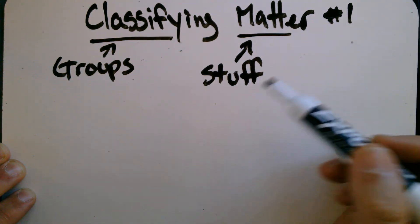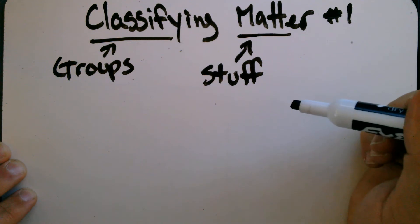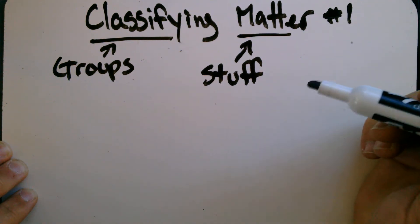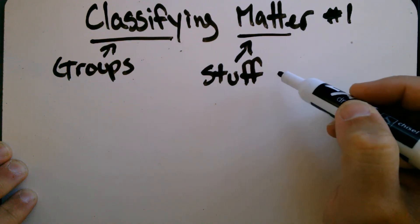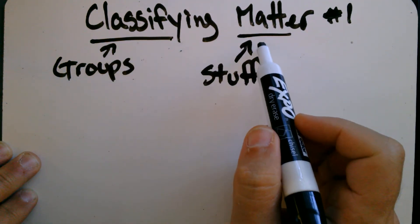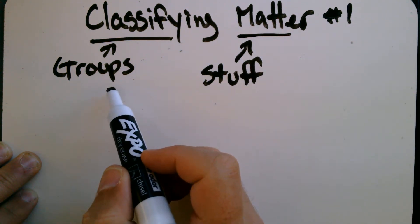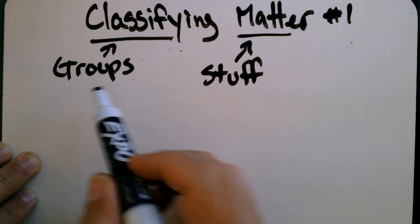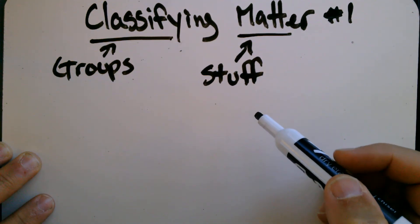Stuff. Matter is anything in the universe that has mass and takes up space. So stuff, so air, water, people, plants, your video game console, your Chromebook, the chair you're sitting in, it's all matter, it's all stuff. So really, when we talk about classifying matter, what we're really talking about doing is just putting stuff into groups. Now, we're going to look at, in this video, three specific ways that we're going to do that.